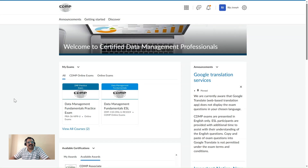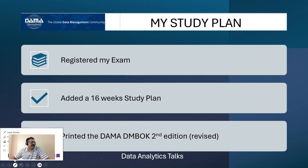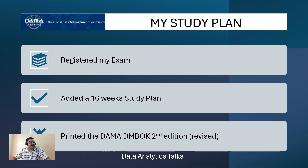The first part — registering for the exam — is done. As I mentioned, this is an open book exam and you have 12 months to take it. I would like to complete it as soon as possible, and without a plan that is basically not possible. So I have come up with a 16-week study plan.